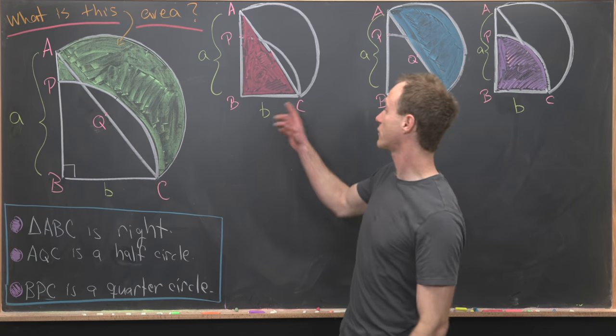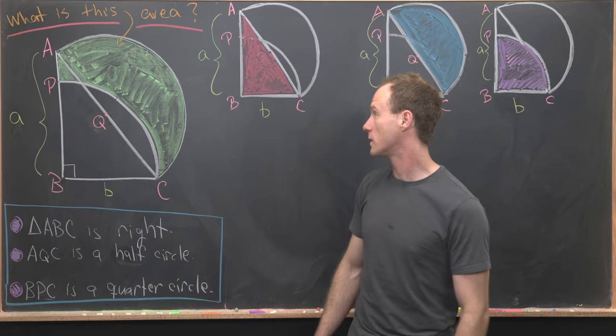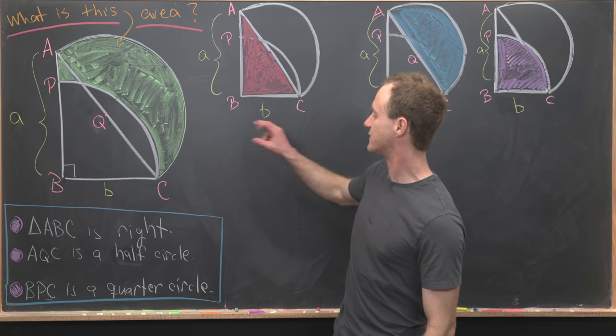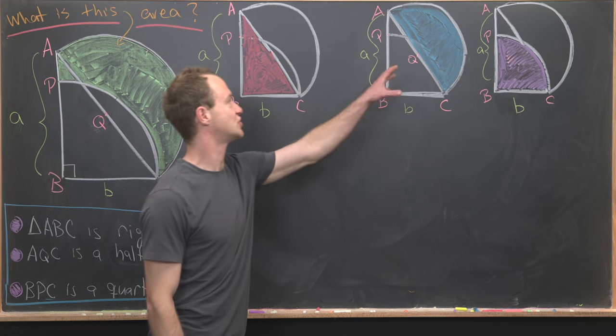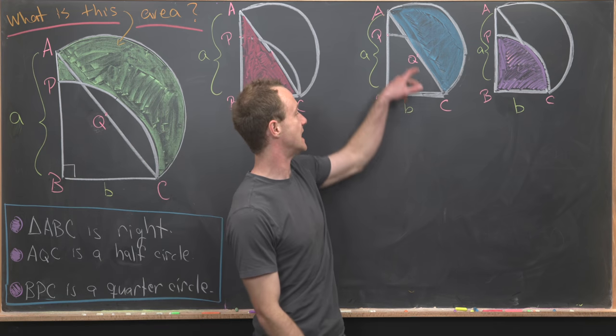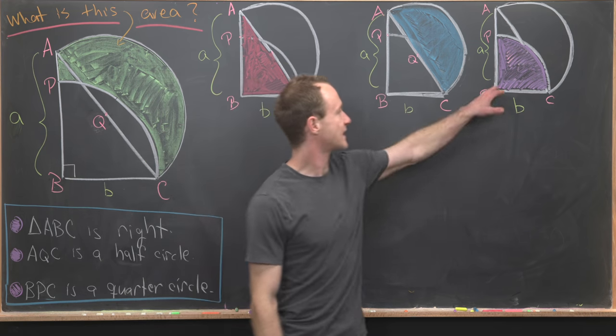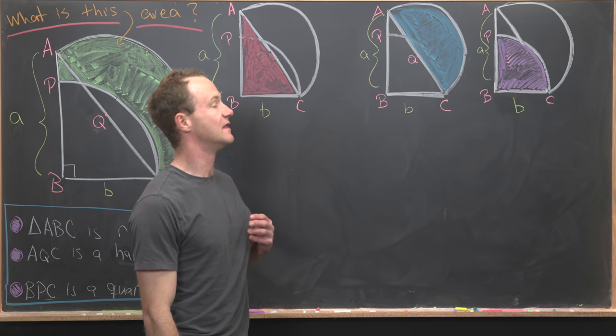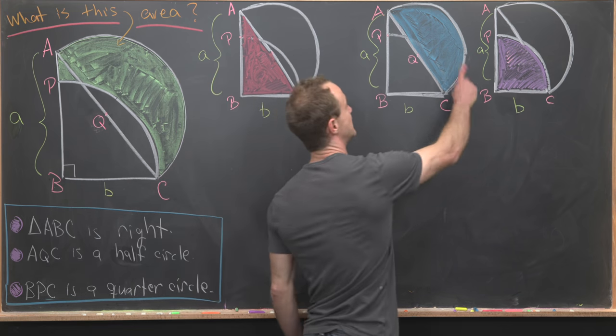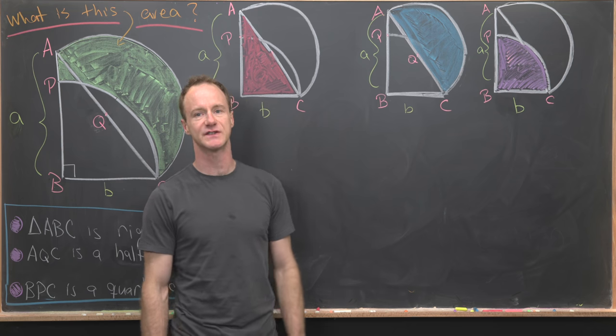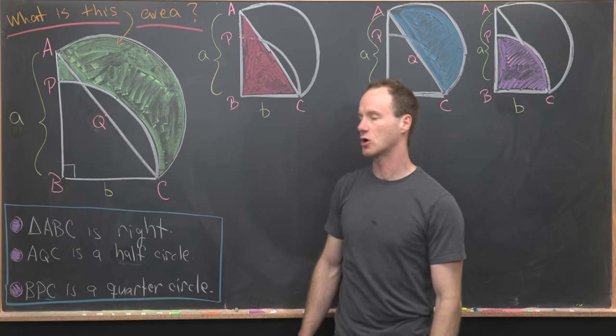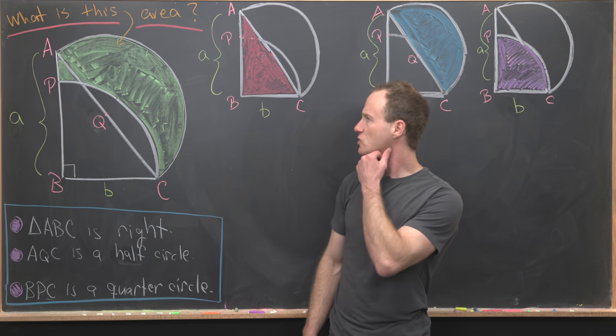I've added three copies of my picture on the board. In this one I've shaded the right triangle ABC. In this second one I have shaded the semicircle AQC. And finally over here I've shaded the quarter circle BPC. Now we want to see how we can combine the areas of these figures together to get the area of our goal picture.